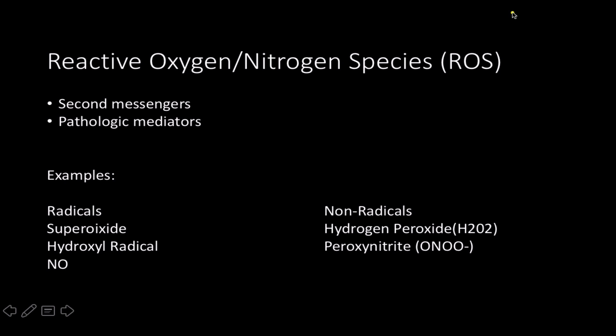Reactive oxygen species and reactive nitrogen species — the collective abbreviation is ROS — have two primary functions: one as a second messenger, and the other as pathologic mediators. There are two classifications: the radicals and the non-radicals. Non-radicals are peroxides, but they end up generating radicals anyway. One of the most common and most reactive ones is superoxide, which is basically diatomic oxygen with a radical attached to it.